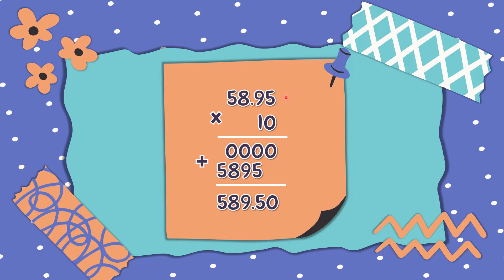Don't forget to count the number of decimal places to the right of the decimal point. So, the answer is 589 and 50 hundredths.